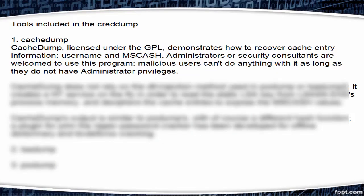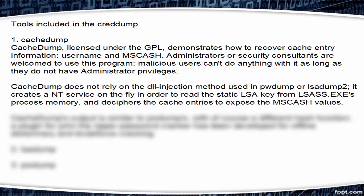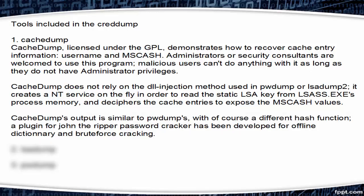Tools included in Creddump: Cachedump, licensed under GPL, demonstrates how to recover cache entry information — username and mscache. Administrators or security consultants are welcome to use this program; malicious users can't do anything with it as long as they do not have administrator privileges. Cachedump does not rely on the DLL injection method used in pwdump or lsadump. It creates NT services on the fly in order to read the static LSA key from lsass.exe's process memory and deciphers the cache entries to expose the mscache values. Cachedump's output is similar to pwdump's, with a different hash function, and a plugin for John the Ripper password cracker has been developed for offline dictionary and brute force cracking.